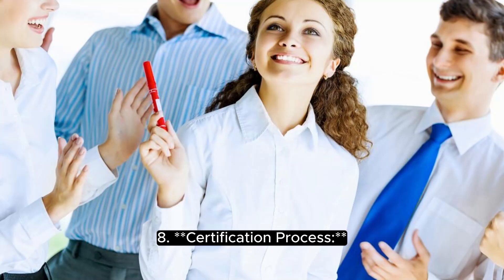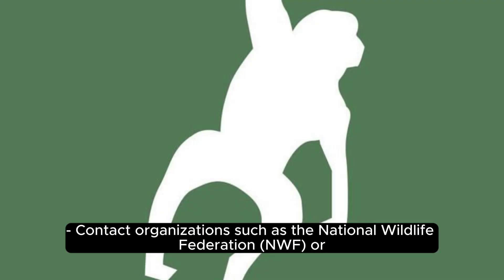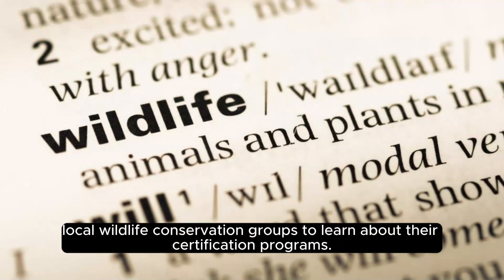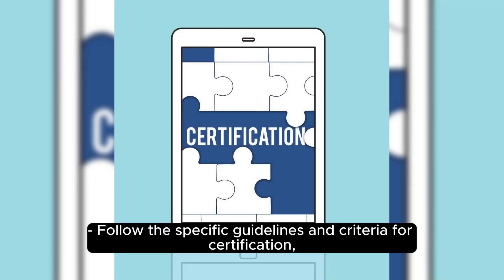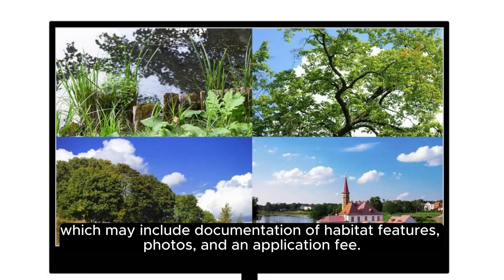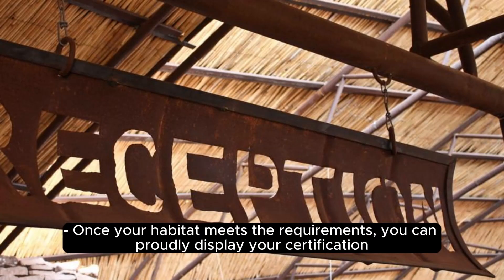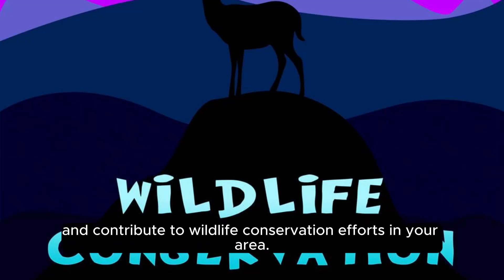Certification Process: Contact organizations such as the National Wildlife Federation or local wildlife conservation groups to learn about their certification programs. Follow the specific guidelines and criteria for certification, which may include documentation of habitat features, photos, and an application fee. Once your habitat meets the requirements, you can proudly display your certification and contribute to wildlife conservation efforts in your area.